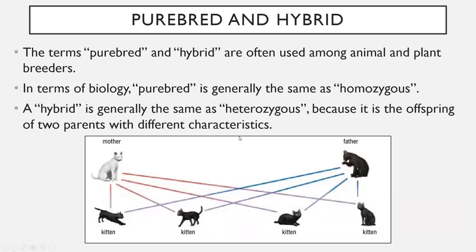Homozygous and heterozygous are the scientific terms we prefer to use. However, the terms purebred and hybrid are often used among animal and plant breeders. In biology, purebred is generally the same thing as homozygous. A hybrid is generally the same thing as heterozygous, because it's the offspring of two parents with different characteristics.